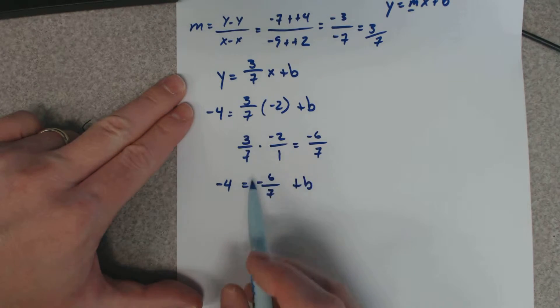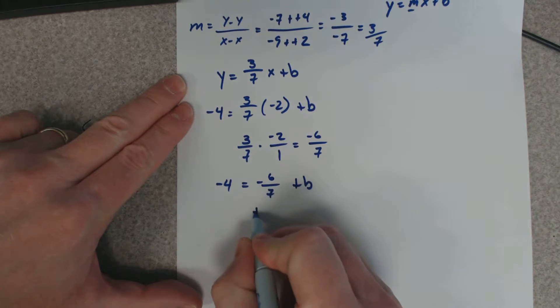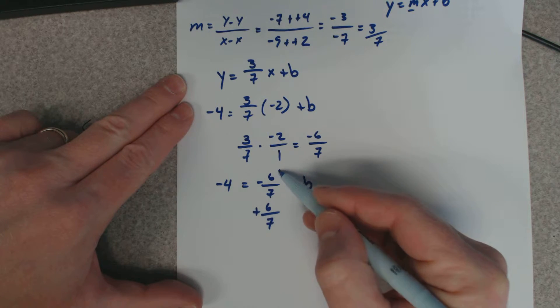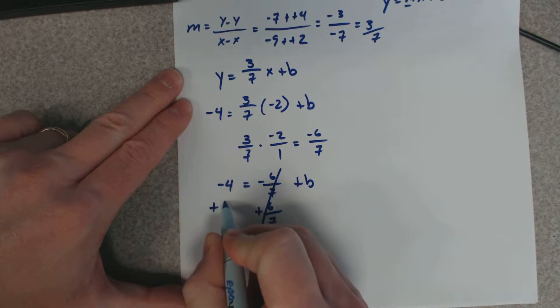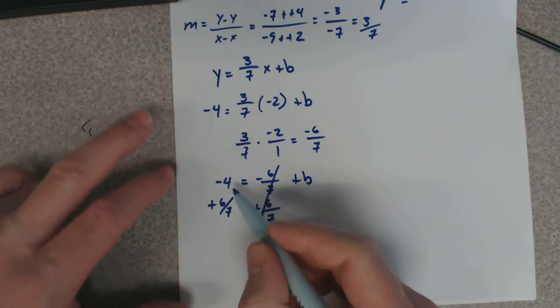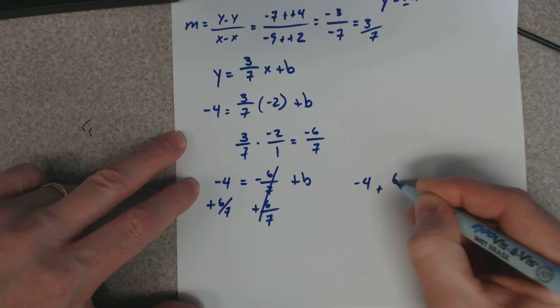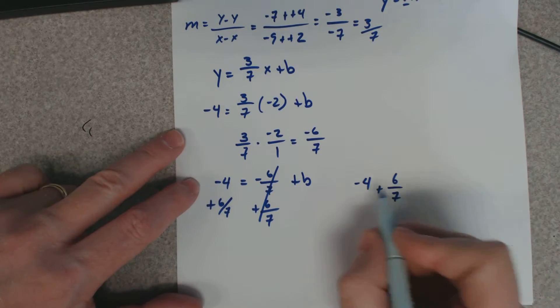So here's what we got: negative 4 equals negative 6/7 plus b. Now we're going to add this away. Negative 6/7 plus 6/7 cancels to zero, but then we need to add it over here.